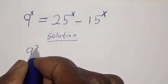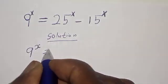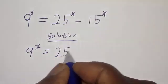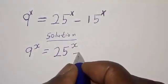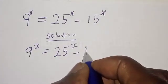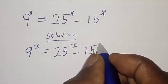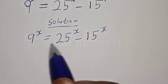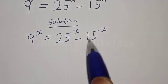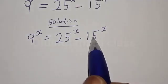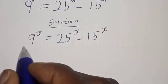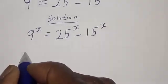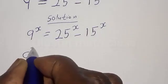Solution. We have the given equation: 9 raised to power s is equal to 25 raised to power s minus 15 raised to power s. This is a perfect square, this is a perfect square, and this is not a perfect square — we have 15 raised to power s. Let's divide throughout by 9 raised to power s.